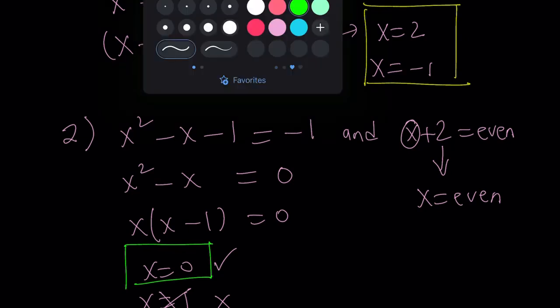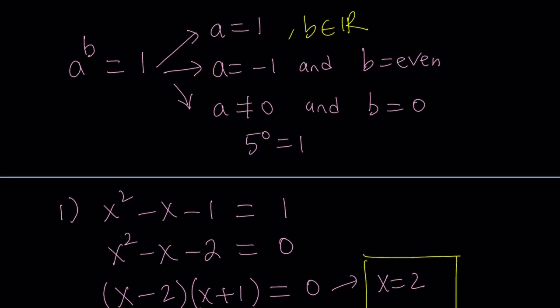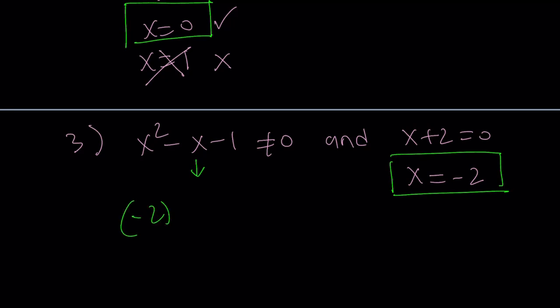So we're going to look at case number 3 now. Let's remember what it was. It was the base not being 0, but the exponent being 0. So we have x squared minus x minus 1 does not equal 0, and x plus 2 equals 0. So you don't have to worry too much about the first condition because the second one is easier to check. So we get x equals negative 2 from here. So that seems to be a solution. x equals negative 2 seems to be a solution, but it needs to check here. Instead of looking for the solutions that's not going to make it 0 or will make it 0, it's easier to plug in negative 2. So if you plug in negative 2, negative 2 squared minus negative 2 minus 1 is 4 plus 2 minus 1, and that is equal to 5. Obviously, 5 does not equal 0.